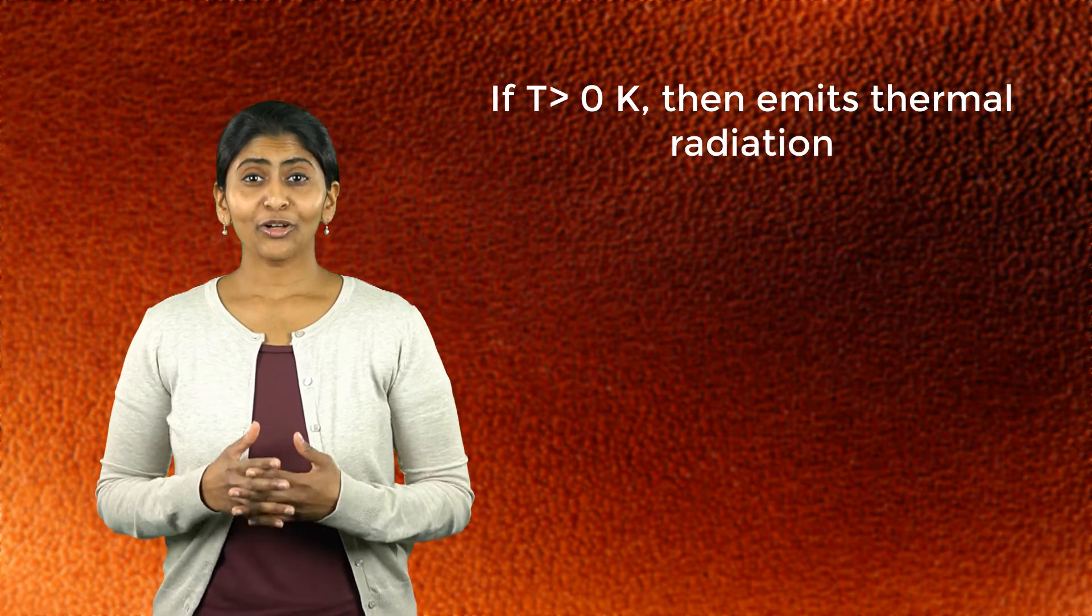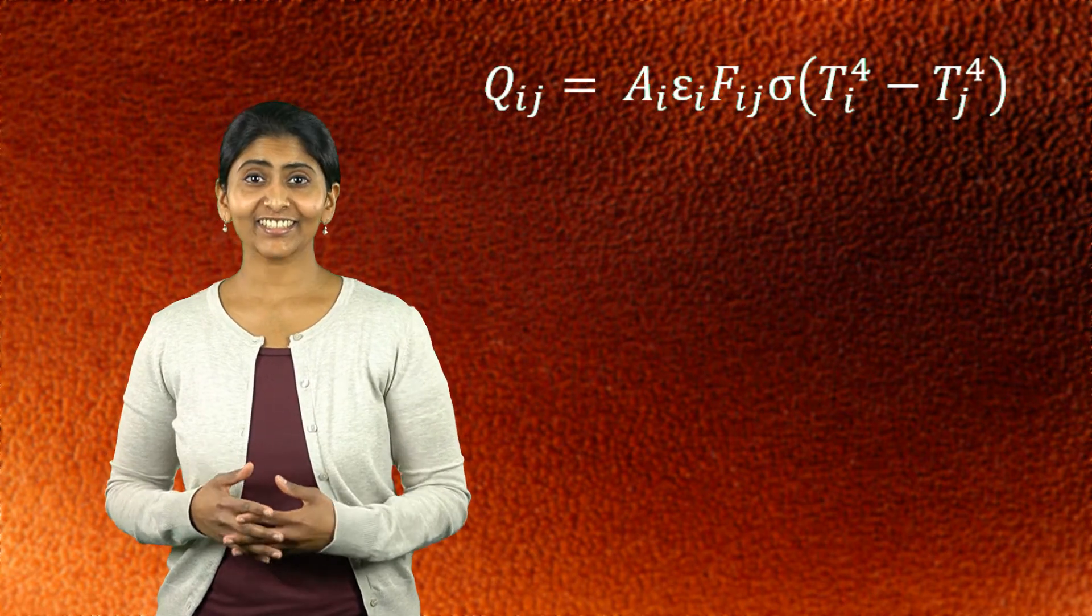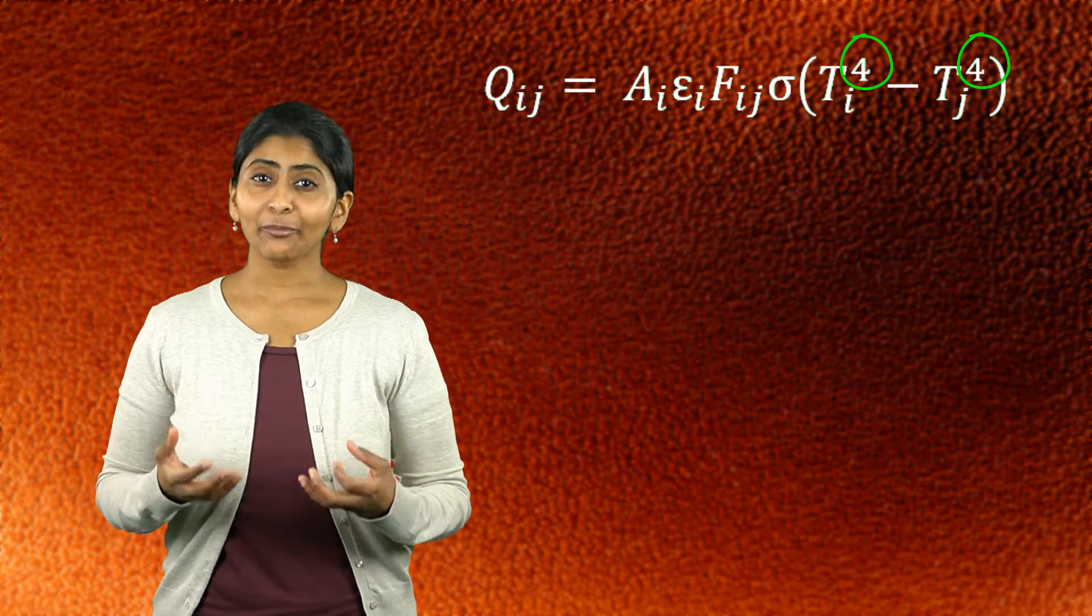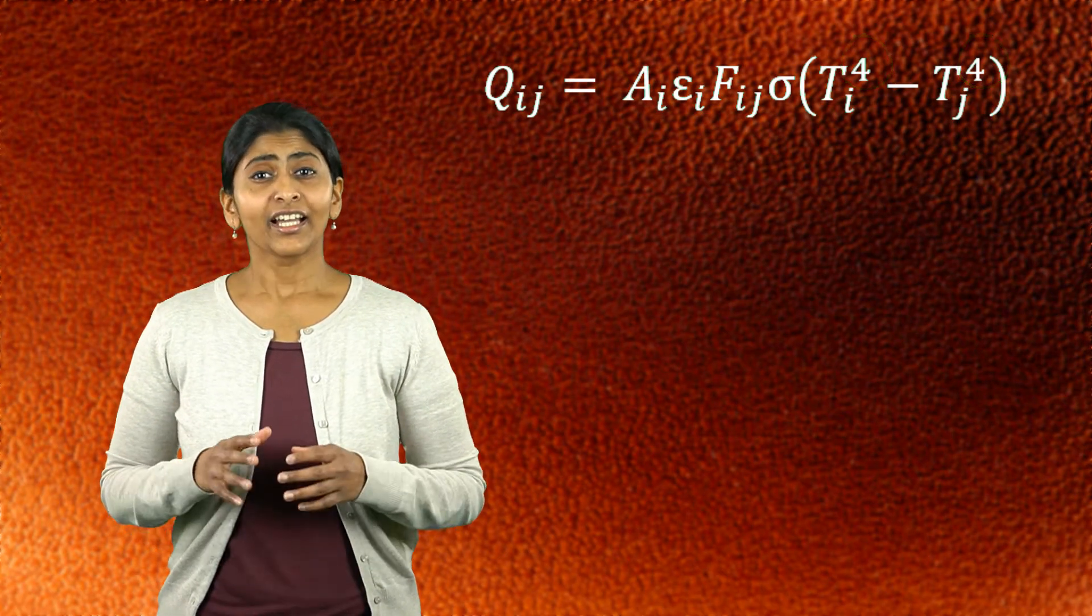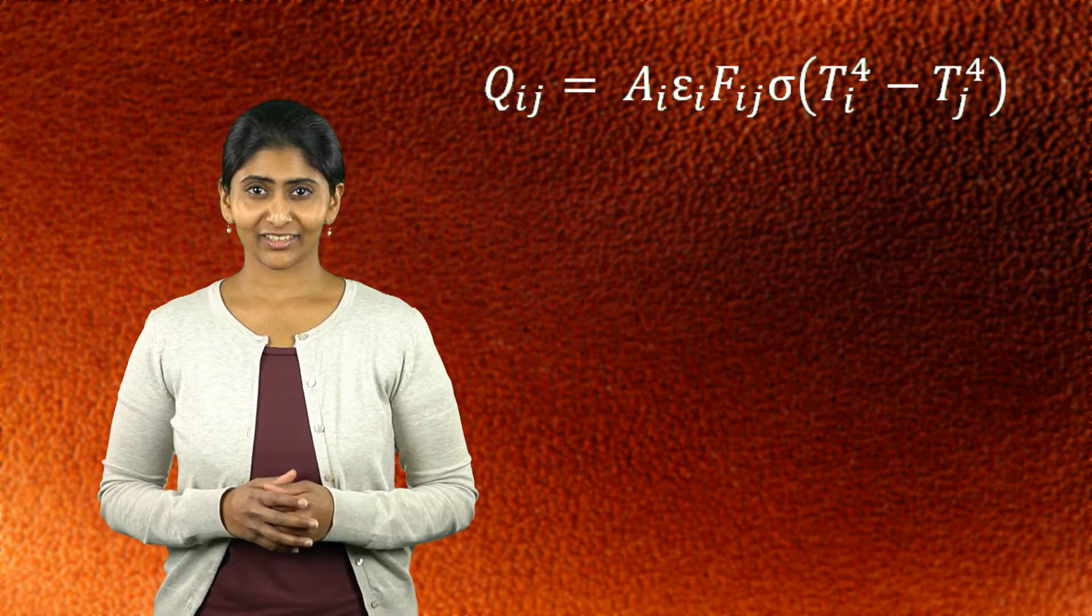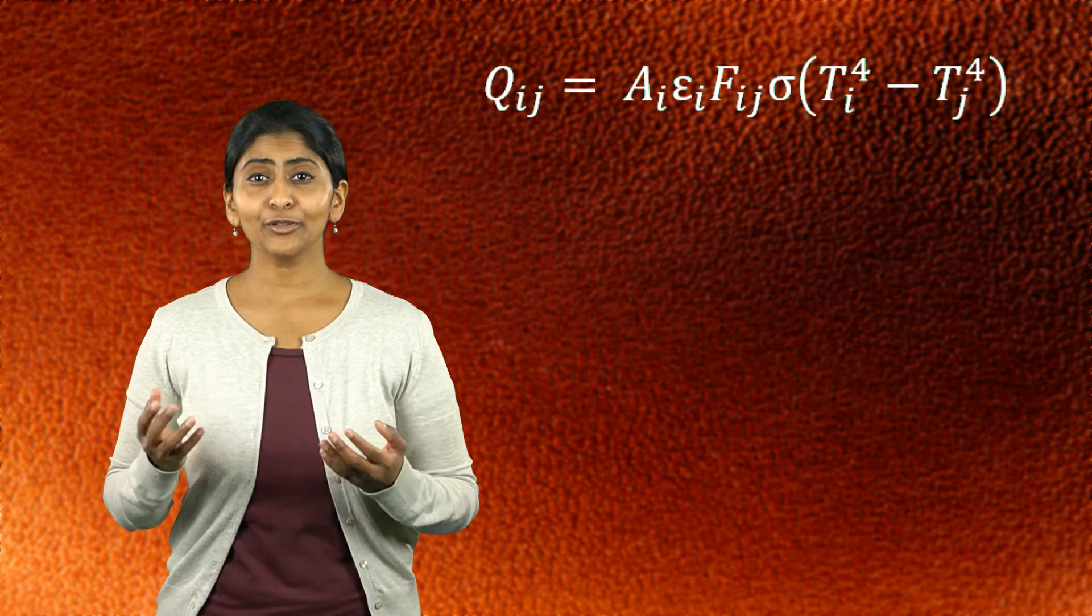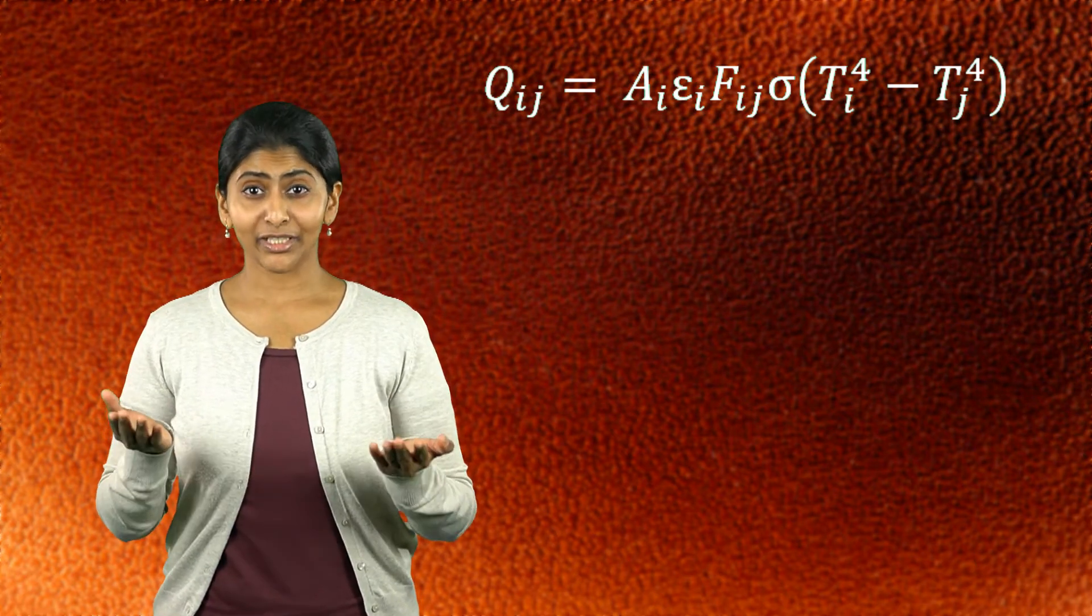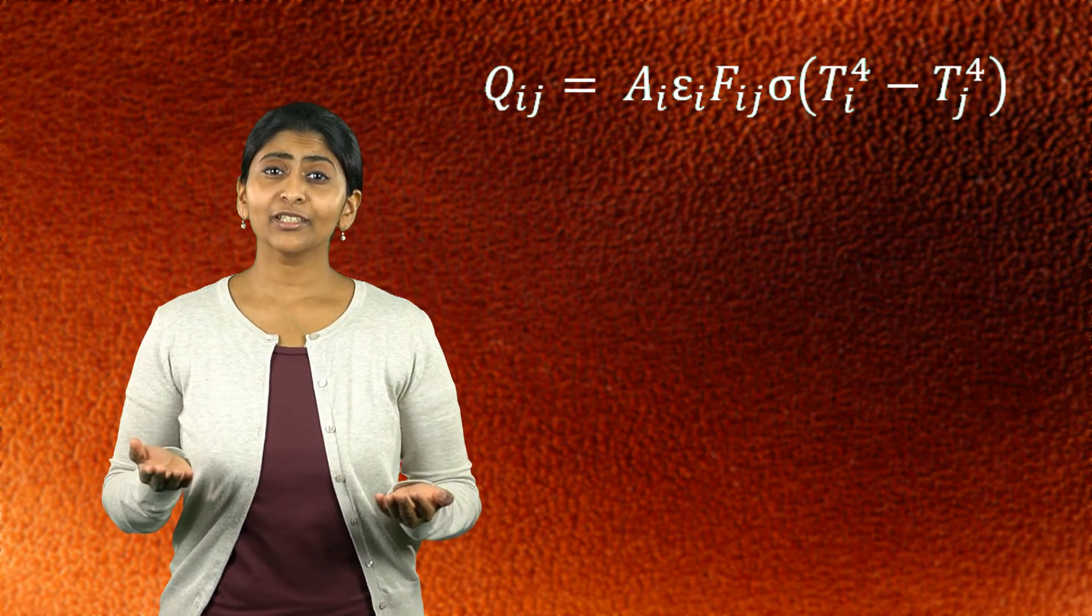All materials having temperature greater than absolute zero emit thermal radiation. Based on the radiation equation, we can see that the radiant energy exchange is directly proportional to the fourth order of the absolute temperature of the two surfaces. This has two implications. Not only does the amount of heat radiated between two surfaces depend on the temperature difference between them, but it also depends on their absolute temperature.